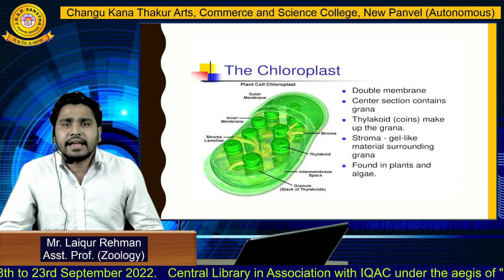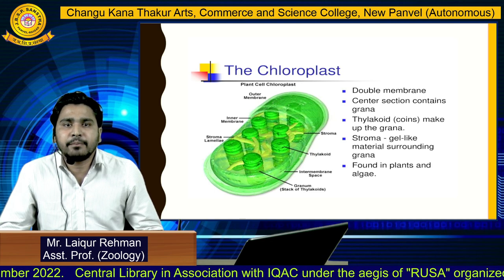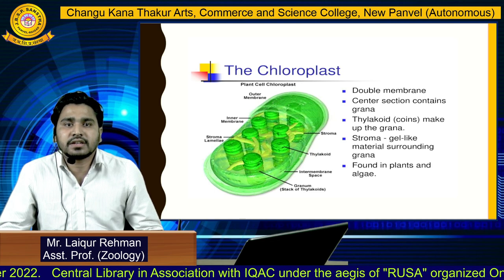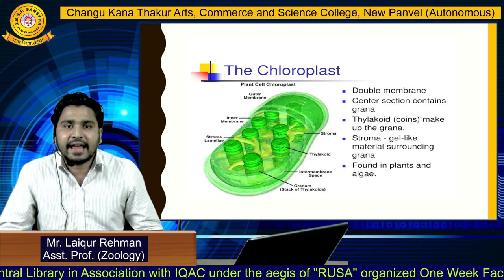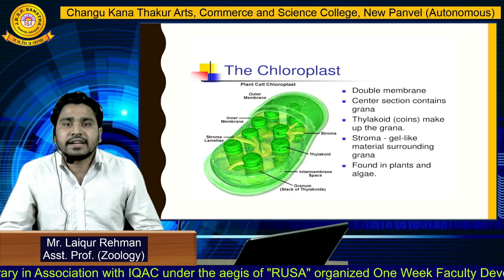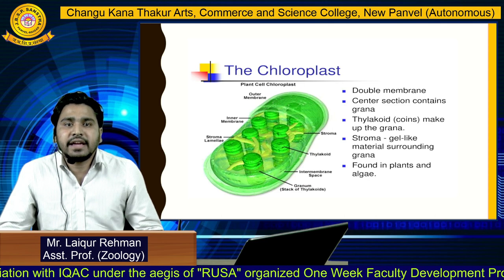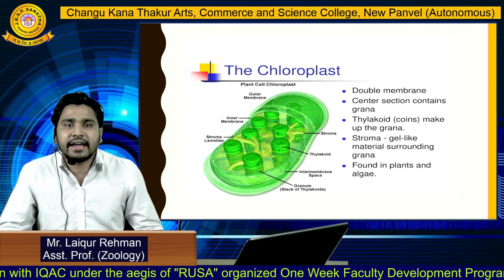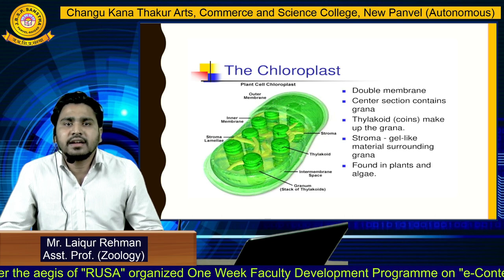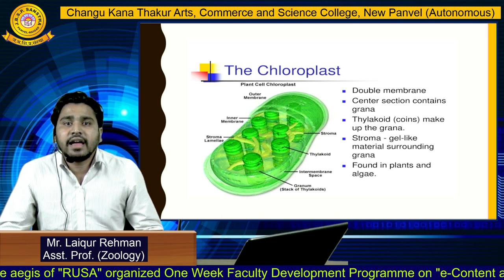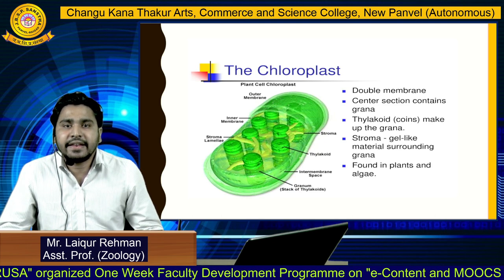The chloroplast is a double-membraned structure. The center section contains the grana — thylakoid coin-like stacked structures that make up the grana. The stroma is the gel-like material surrounding the grana. This organelle is found in plants and algae.